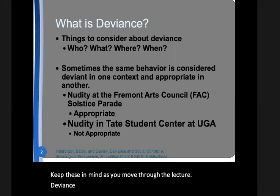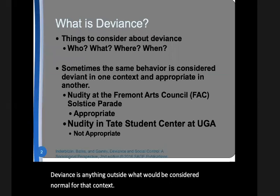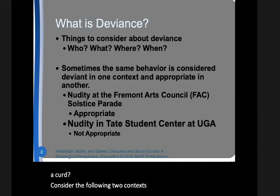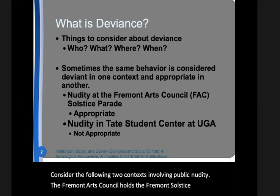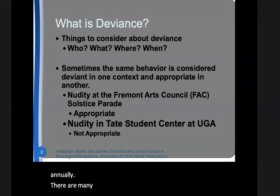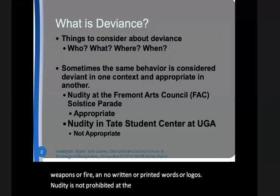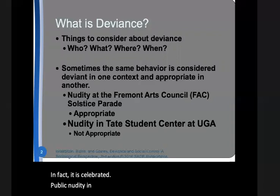Deviance is anything outside of what would be considered normal for that context. How do we know when a deviation from normal has occurred? Consider the following two contexts involving public nudity. The Fremont Arts Council holds the Fremont Solstice Parade annually. There are many prohibited behaviors including things like no real weapons or fire and no written or printed words or logos. Nudity is not prohibited at the Fremont Solstice Parade. In fact, it is celebrated. Public nudity in this context is not deviant.